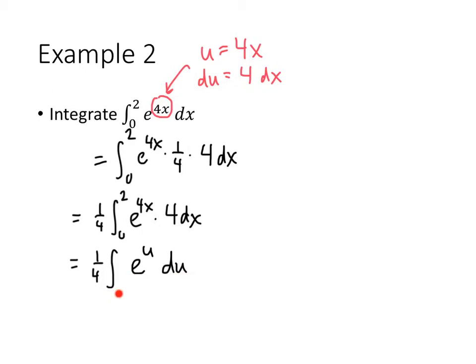But x was the thing that was going from 0 to 2. I don't know what u is going to or from. So a good way to just account for that, to remind ourselves not to plug in 0 and 2 for u, is on my integral to write x equals 0 and x equals 2. That way I don't forget that those are really values for x rather than values for u.